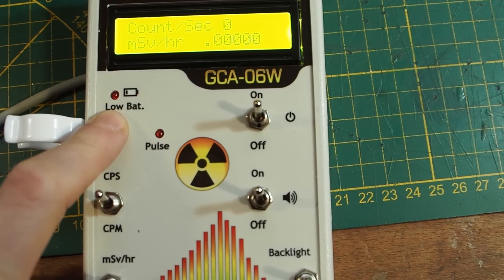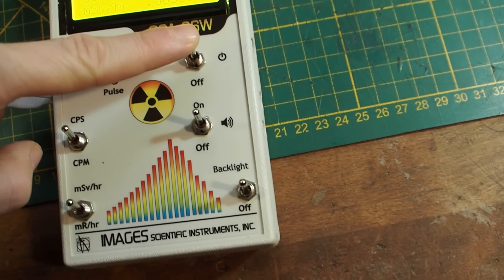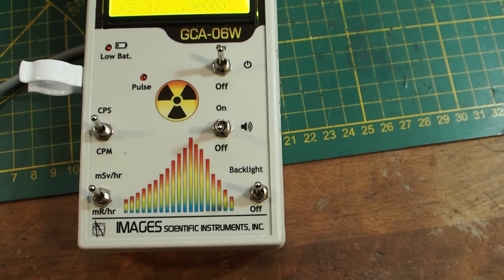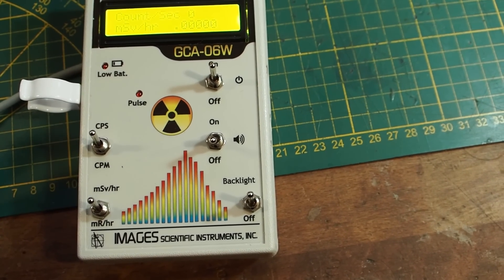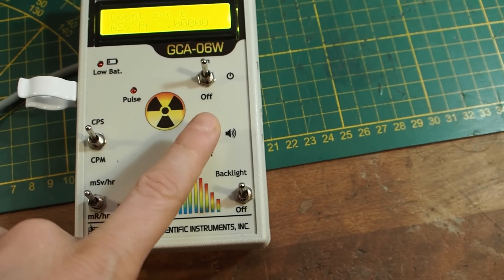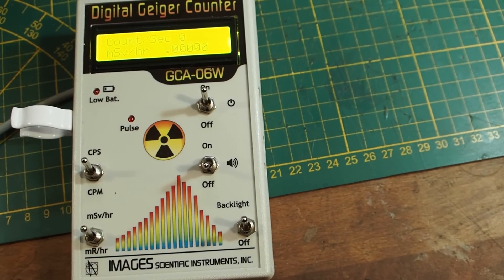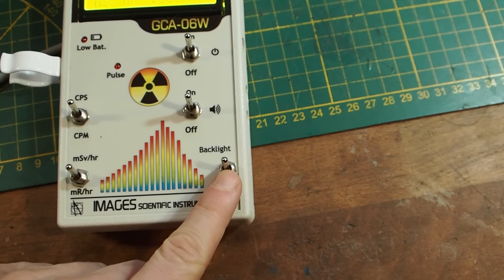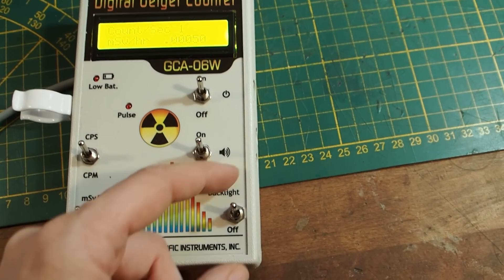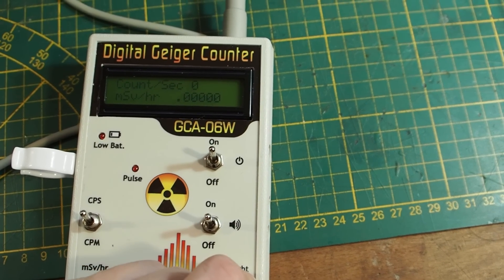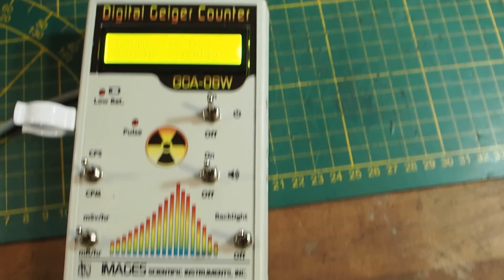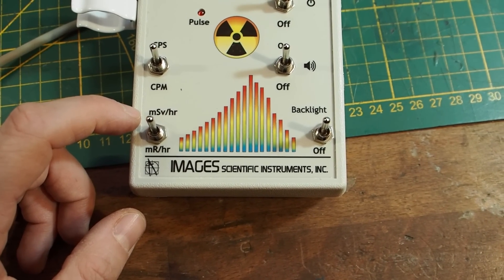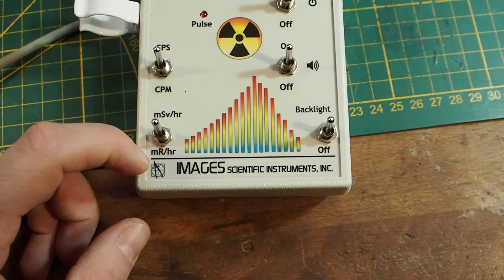Then also here we have an indicator for low battery. This is the power switch. With this switch here you can turn off the sound. So sometimes you don't want to attract any attention and then switching off the sound is a good thing but then you still have the pulse LED. Then here you have another switch which can switch off and on the backlight to save some battery and then here you have a switch which is letting you decide between millisievert and millirad per hour.